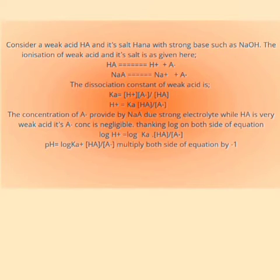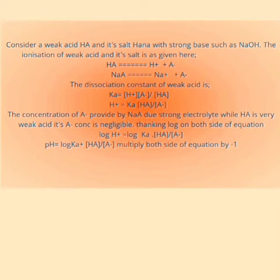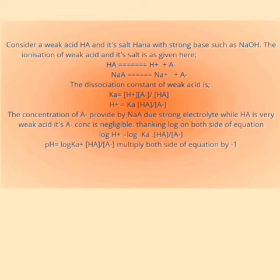The A⁻ ion is provided by the sodium salt NaA, which is a very strong electrolyte, while HA is a very weak acid. So A⁻ is provided in negligible amount by the weak acid HA. Therefore, predominantly, A⁻ is taken from the salt.